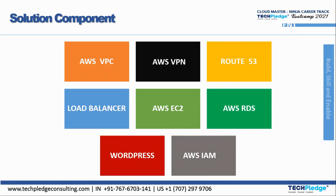Route 53 acts like a DNS — it routes user request connections to the infrastructure running in AWS. It will route all user requests to that infrastructure. The Load Balancer, as the word itself suggests, is going to balance the load. All the traffic coming in will be balanced and then distributed to the servers.